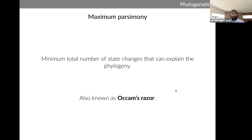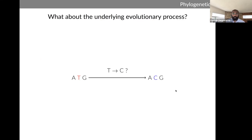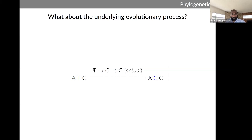Maximum parsimony methods suffer from one key limitation: they don't have any knowledge of the underlying evolutionary process. For example, if a sequence goes from ATG to ACG, maximum parsimony will tell us the mutation is a T to a C. However, the underlying evolutionary process could actually be T to G to C, and maximum parsimony has no way of identifying if that intermediate nucleotide actually exists.